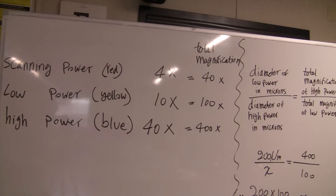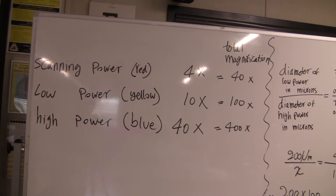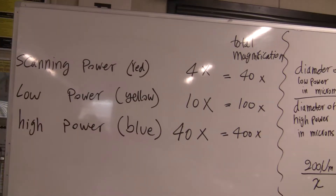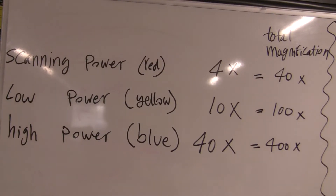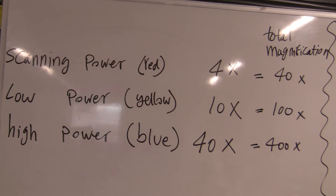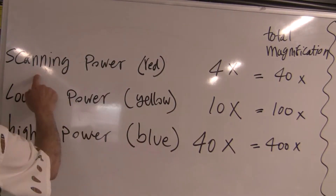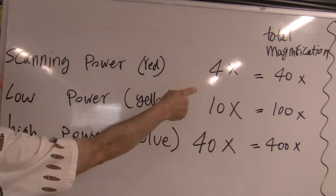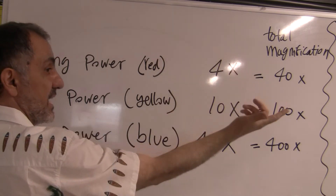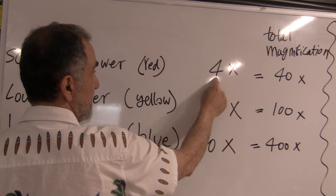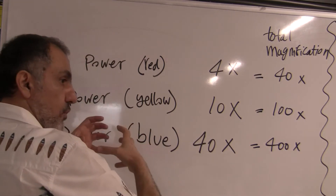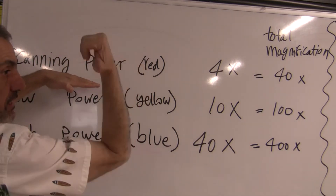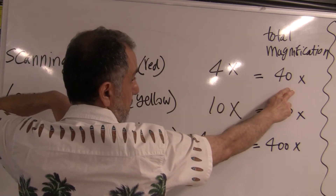There is a lot of reflection of light here. Scanning power is 4x. So the objective lens is 4x and the ocular lens is 10x. Based on the laws of lenses, 4 times 10 equals 40. So when you look at something on the microscope on scanning power — the red lens — you see it 40 times bigger.